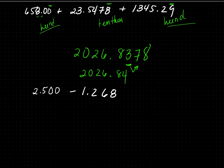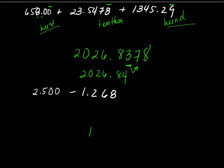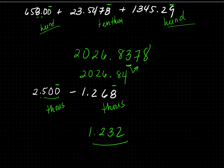For the second problem, if you calculated correctly you should get 1.232. Find the last significant digit for all original numbers. For 2.500, the last significant digit is the last 0 — there's a decimal and a significant digit in front, so those zeros are significant, placing it at the thousandths. For 1.268, the last significant digit is 8, also in the thousandths place. So we must round the final answer to the thousandths place — and we did: 1.232.